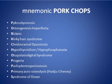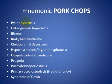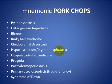What are the other causes of wormian bones? We can collect most of the causes with a mnemonic: PORKCHOPS. These include pyknodysostosis, osteogenesis imperfecta, rickets, kinky hair syndrome, cleidocranial dysostosis, hypothyroidism, hypophosphatasia, porphyria, pachyder moperiosteosis, Down syndrome, and primary acro-osteolysis.